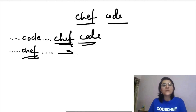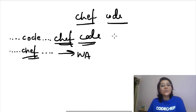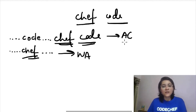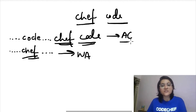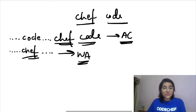The second thing that can happen is that you haven't encountered a 'code' but the first meaningful word you encounter is 'chef'. In this case, this 'chef' does not have a 'code' placed before it in the string, so the condition for the string being Chef's favorite has already been broken — we output WA. In the problem, if it is Chef's favorite string we output AC, and if not we output WA.